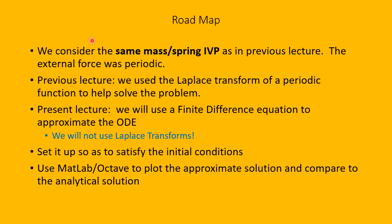Here's a roadmap of this lesson. We will consider the same mass-spring initial value problem as in the previous lecture, where the external force was periodic. In the previous lecture, we used the Laplace transform of a periodic function to help solve the problem. In the present lecture, we will not use the Laplace transform. Instead, we will use a finite difference equation to approximate the ordinary differential equation, set up to satisfy the initial conditions. We will use Octave, which is about 90% compatible with MATLAB, to plot the approximate solution and compare it to the analytical solution obtained using the Laplace transform.